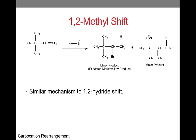Another way carbocation rearrangement can occur is through a 1,2-methyl shift, which is where the movement of a methyl group occurs. The mechanism is similar to the 1,2-hydride shift, but here we are moving a methyl group instead of a hydrogen atom.